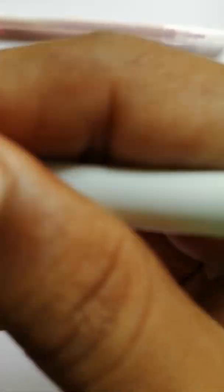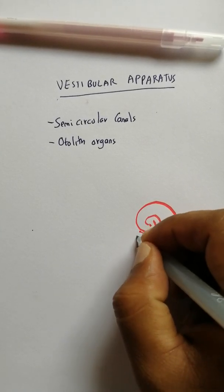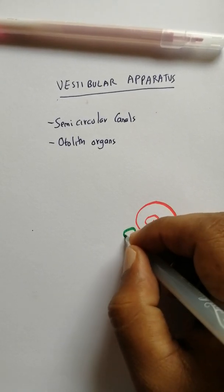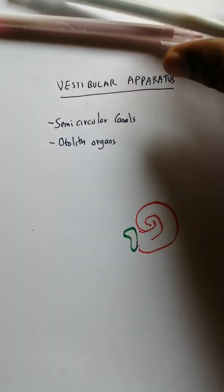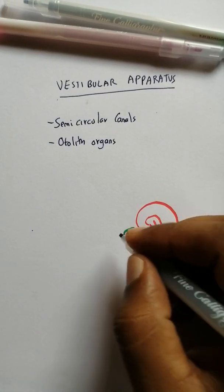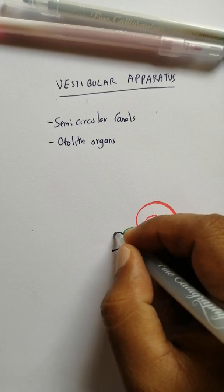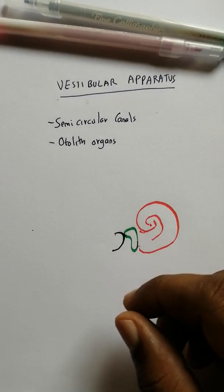So you have the otolith organs. There is the saccule—so this is the saccule—and then you have the utricle.